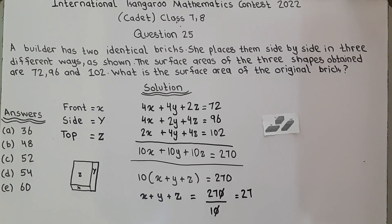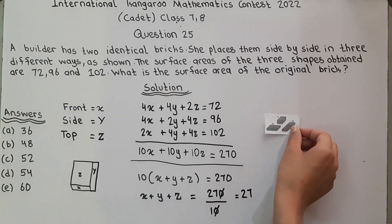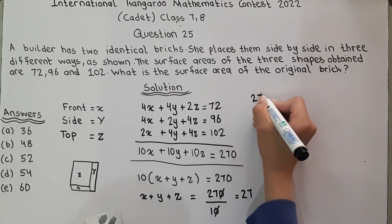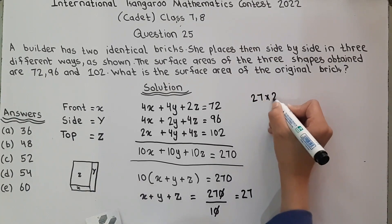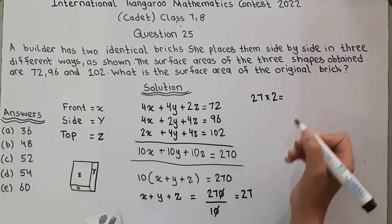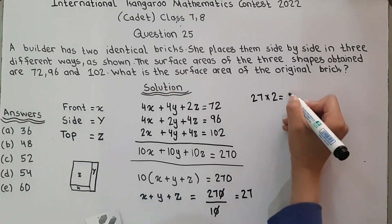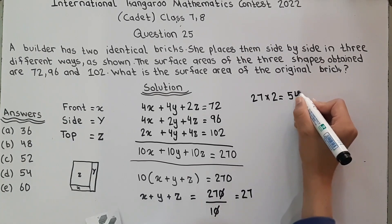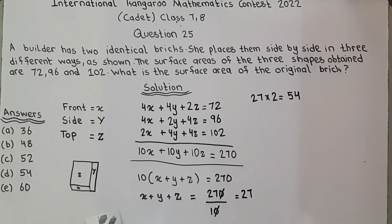Now they are asking for the surface area of the original brick. The surface area of one brick is 2(X plus Y plus Z), so we multiply 27 by 2: 27 times 2 equals 54. The surface area of the original brick is 54, which is option D.